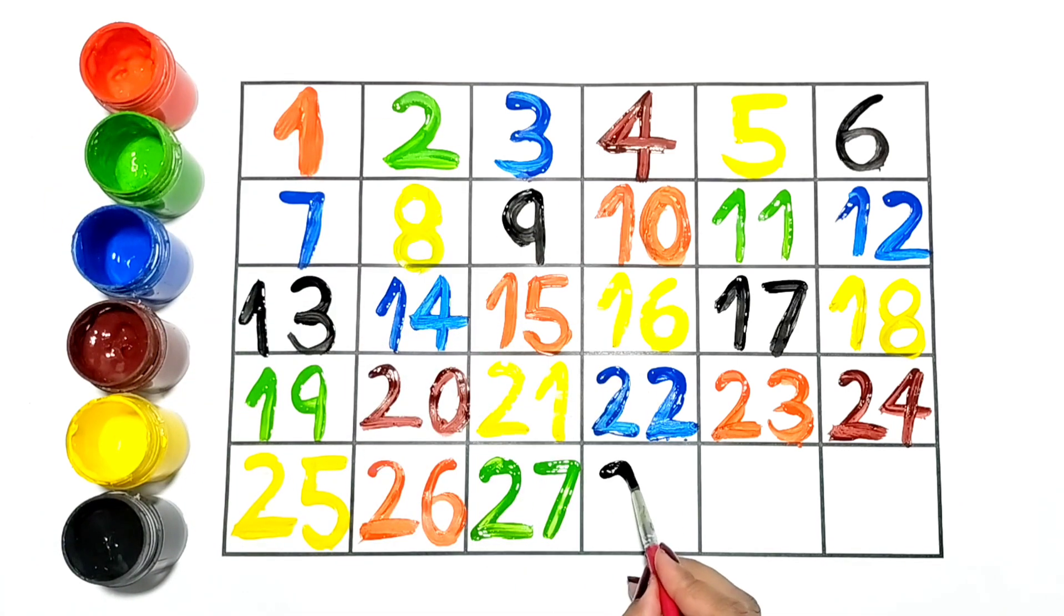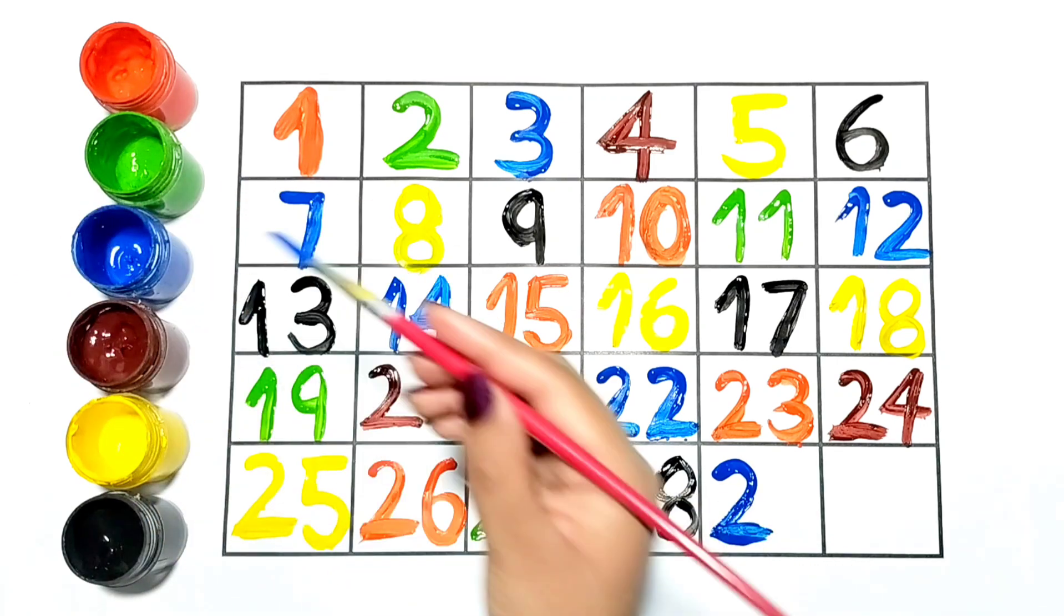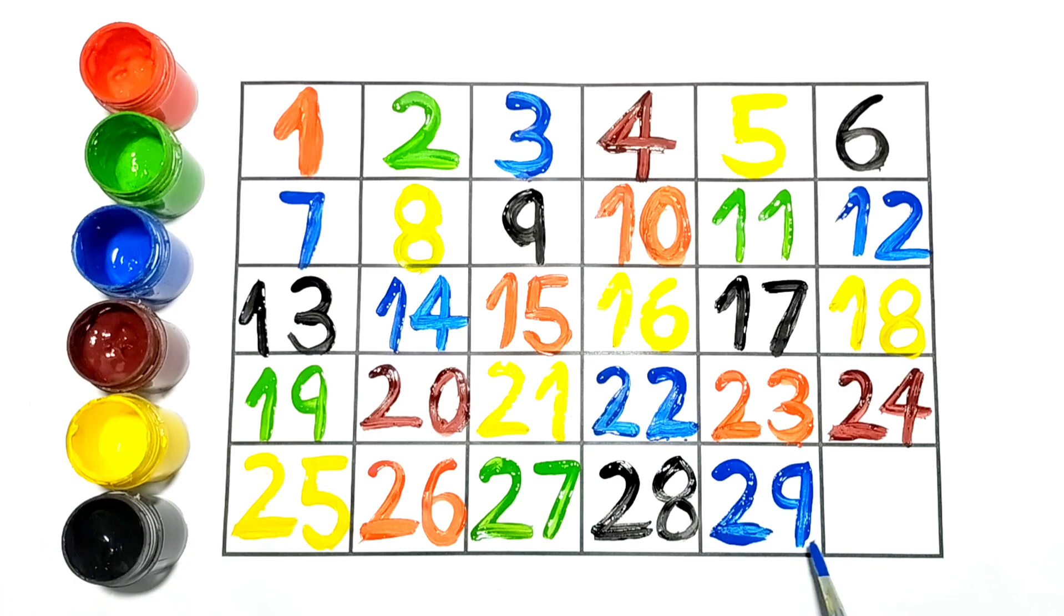This is 28. Now I am writing 29. And this is 30, it is in green color.